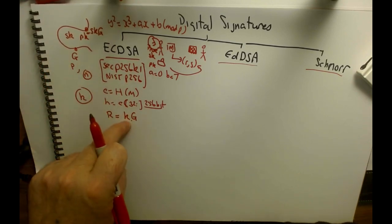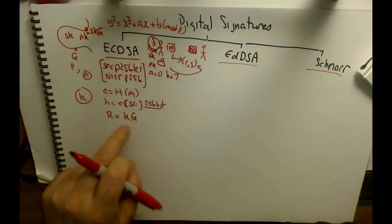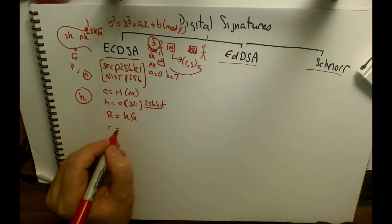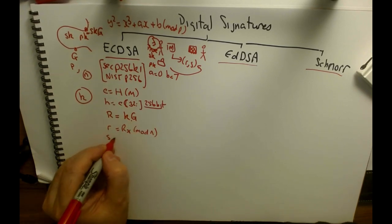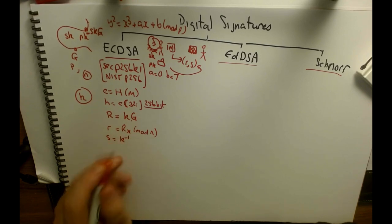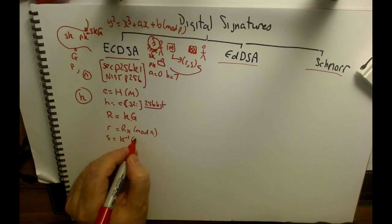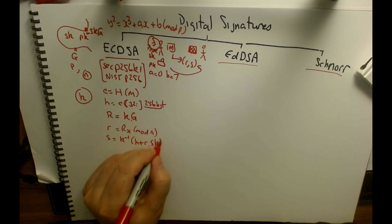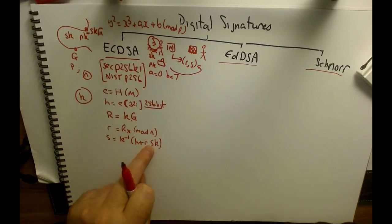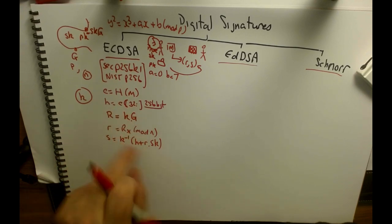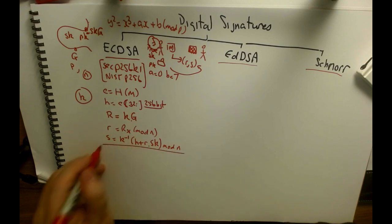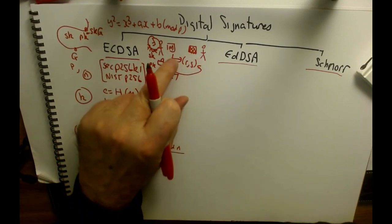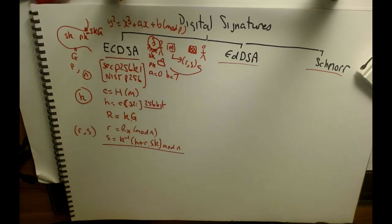We create a point R equal to k·G — adding G k times to get this point. We take the x-coordinate of R and do mod n. For s, we compute k⁻¹ mod n, multiplied by (h + r·sk). Alice knows the secret key, the value of r and h, and can compute the modular inverse of k. She then sends r and s along with the message and her public key.